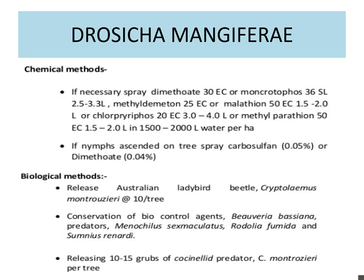Biological methods: release Australian Lady Bird Beetle, that is Cryptolaemus. Conservation of biocontrol agents including Beauveria bassiana. Predators include Menochilus, Sexmaculatus, Rodolia, and Sumnius. Releasing 10 to 15 grubs of coccinellid predators — that is Coccinella montrezoeri — will control the mealy bug.